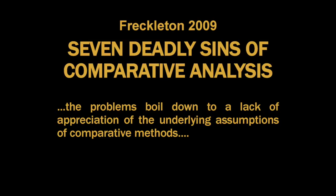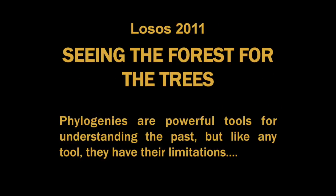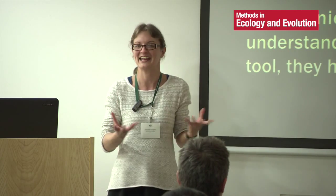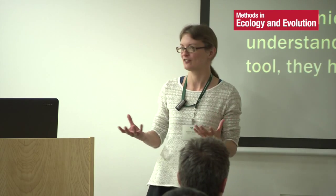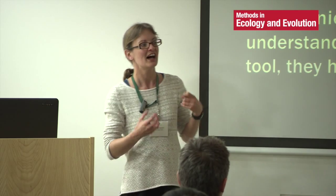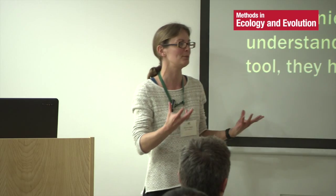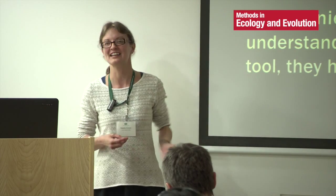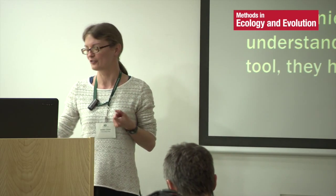This isn't anything new to the community. Rob Freckleton's paper in 2009 was looking at the seven deadly sins of comparative analysis, and he mentions that the problems just boil down to a lack of appreciation of the underlying assumptions. Jonathan Rosasbook in 2011 published 'Seeing the Forest for the Trees,' arguing that phylogenies are powerful tools but have their limitations — not every question lends itself to being answered using a phylogeny, and not every dataset does either. If you have five species of gibbon, it's probably not much point running a PGLS analysis on that data.